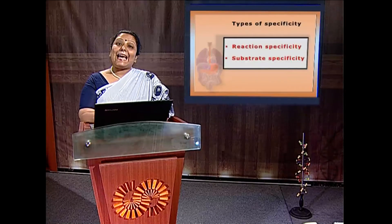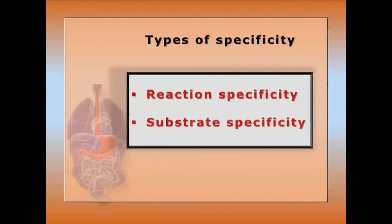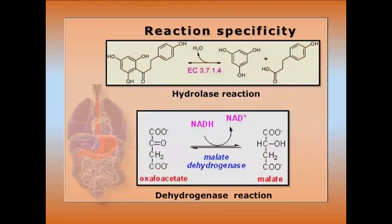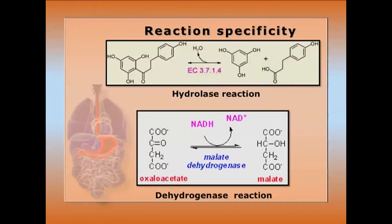Enzymes have stereoselectivity, geometrical specificity, and chemoselectivity. Absolute specificity means an enzyme reacts on a specific substrate only — for example, urease acts on urea alone to give ammonia and water. Types of specificity may be reaction specificity or substrate specificity. In reaction specificity, an enzyme catalyzes only one type of reaction, like hydrolase catalyzing hydrolysis.